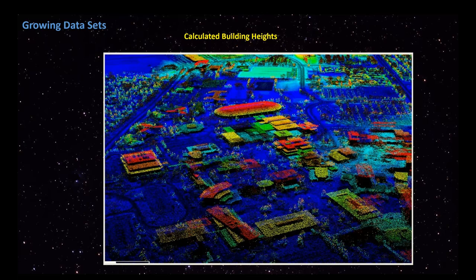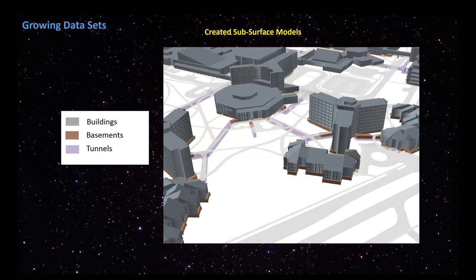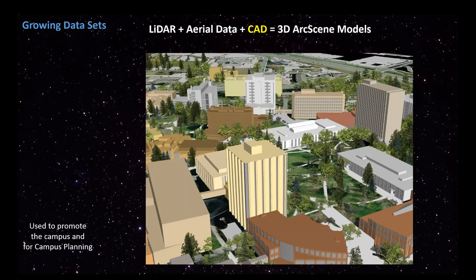Now we have heights and contours. We generated subsurface models by locating things on our campus like our sewers, manholes, and drainage basins. Combining our CAD drawings with the LiDAR data allowed us to create 3D ArcScene models that were realistic. We intentionally chose not to make the building faces photorealistic because many of our buildings are joined together and look the same, making it difficult to identify when you've left one building and entered another — this was done by design. Because this is ArcScene, it also allows us to run queries on our data and get specific information.